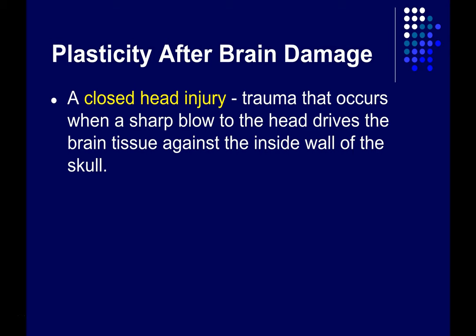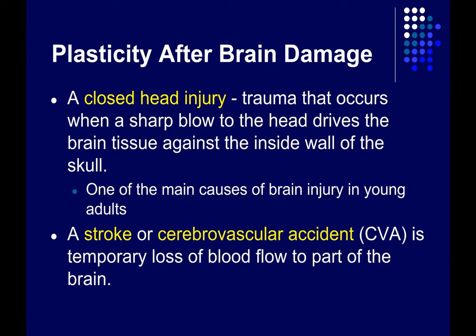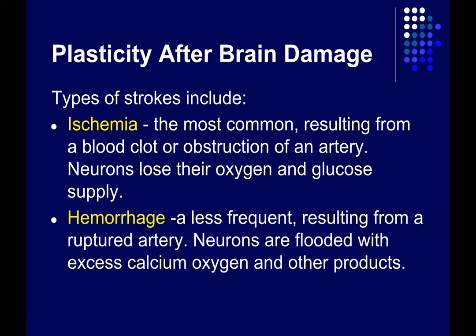A closed head injury involves brain trauma that occurs when there's a sharp blow to the head that drives brain tissue against the inside wall of the skull, and this is one of the main causes of brain injury in young adults. A stroke, or cerebrovascular accident (CVA), is a temporary loss of blood flow to part of the brain and is the most common cause of brain damage in the elderly. There are two types of strokes. Ischemic strokes are the most common by far — they result from a blood clot or other obstruction of an artery, causing loss of blood and nutrients to the parts of the brain fed by that artery, so neurons downstream lose their oxygen and glucose supply.